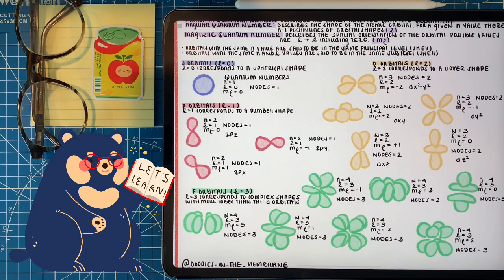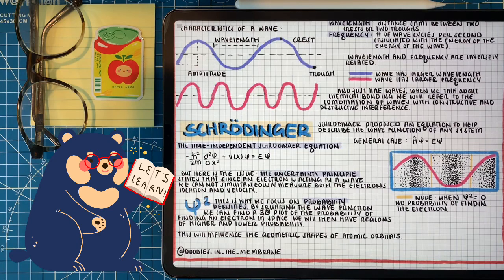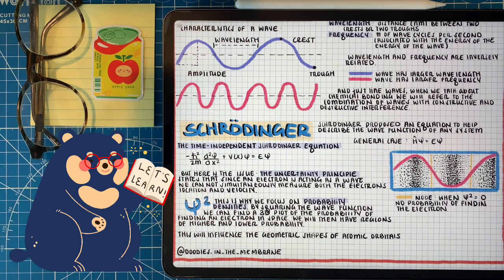The d orbitals have five different orbitals and the f orbitals have seven. Now, backtracking a little — remember when we talked about nodes, where the probability of finding an electron is zero? As we increase the number of nodes, we increase the energy of the wave, because we're increasing the frequency. This is something we can see with atomic orbitals.